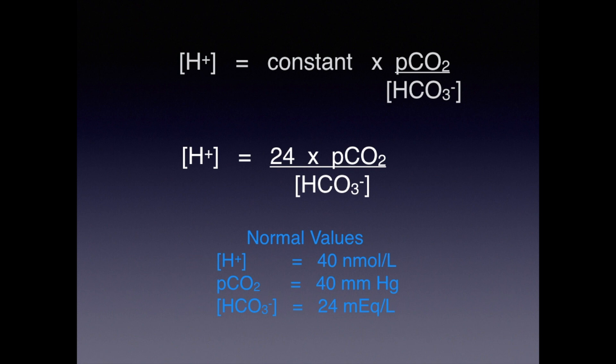Recall that under normal conditions, hydrogen ion concentration equals 40 nanomoles per liter, pCO2 equals 40 millimeters of mercury, and serum bicarbonate level equals 24 milliequivalents or millimoles per liter. Remarkably, this straightforward equation offers us all the information buried in that complicated acid-base nomogram.